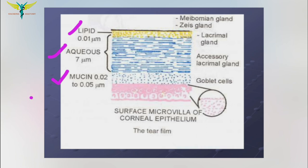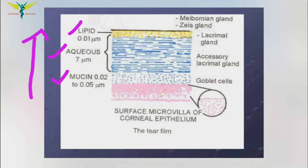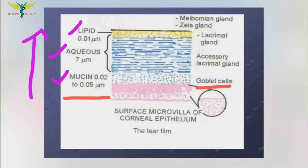The mucin is the innermost layer and the lipid layer is the outermost layer. The mucous layer consists of mucin which is produced by the conjunctival goblet cells and the glands of Manz.